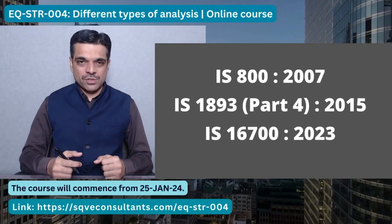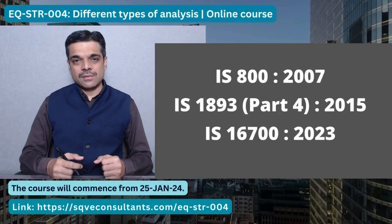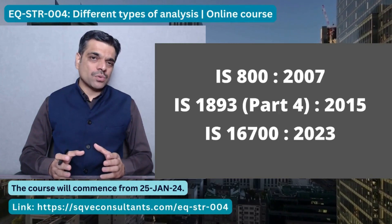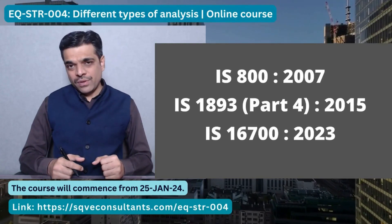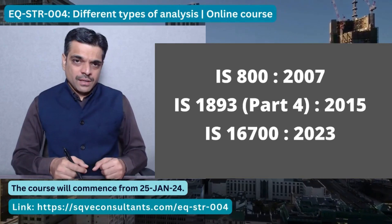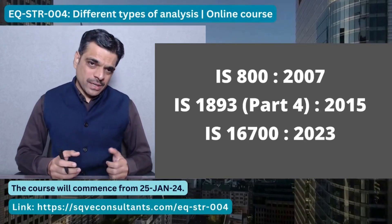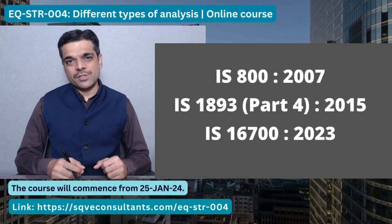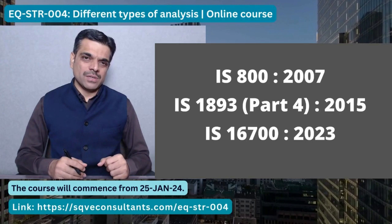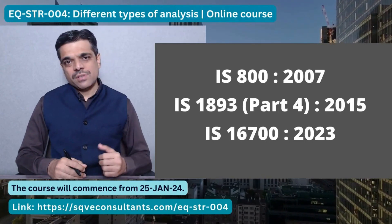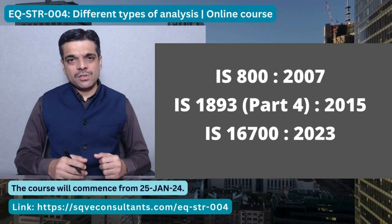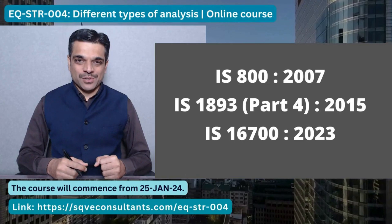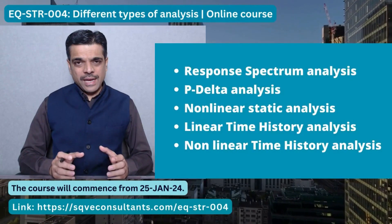IS 1893 Part 4, which is for industrial structures, defines the requirement for performing non-linear time history analysis for verification of the collapse mechanism. Also, as per IS 1893 Part 4:2015, P-delta analysis is mandatory for all industrial structures irrespective of material of construction.